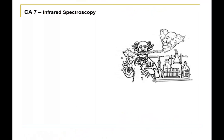In Chem Activity number 7 and in the corresponding videos, we will be exploring infrared spectroscopy. This is a technique that helps us determine the structure of organic molecules. It's one of a suite of three techniques that we use to determine structure, the other two being mass spectrometry and nuclear magnetic resonance spectroscopy.